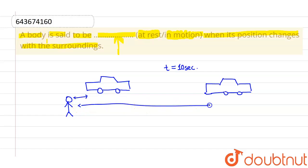So what I can say is that the car is in motion. Why? The car is in motion because it changed its position with respect to me after some time or with the surroundings.